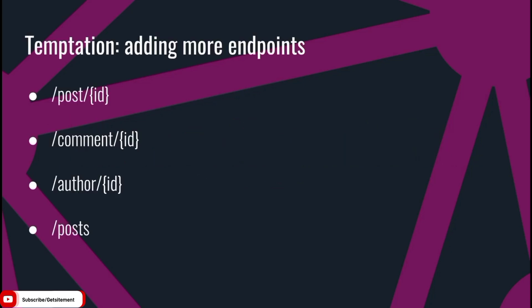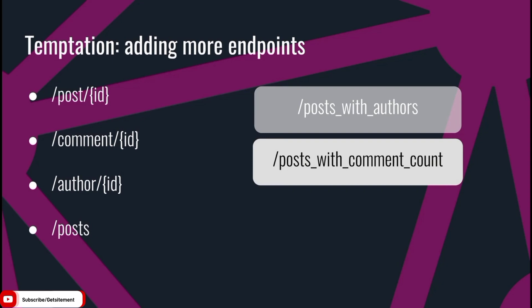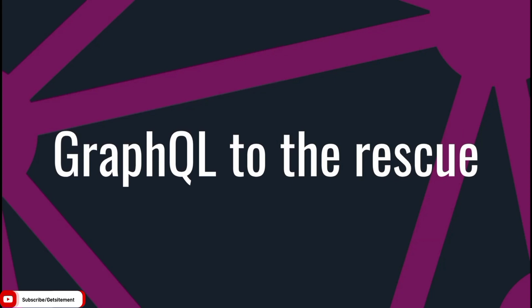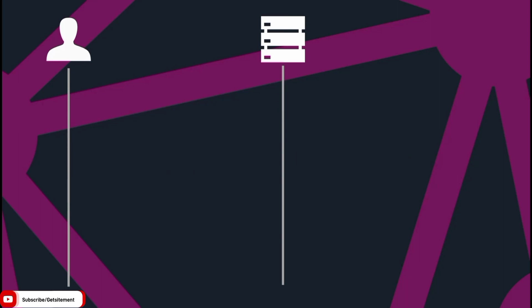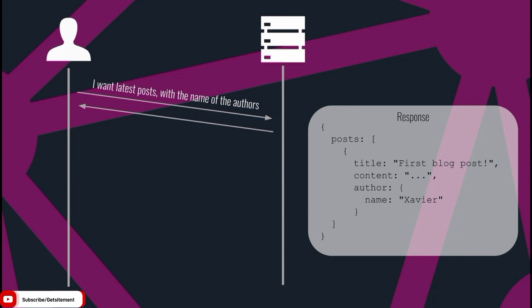You might be tempted to add a few endpoints to solve this problem, like a post-with-authors endpoint. But this is not a very scalable solution — it causes an explosion of endpoints that will be hard to maintain. With GraphQL, you can make a single request and ask for all the resources that you want. Here I can say I want the latest posts with the name of the authors. The GraphQL server will look up the blog post, follow the relationships to the author, and return everything in a single request.